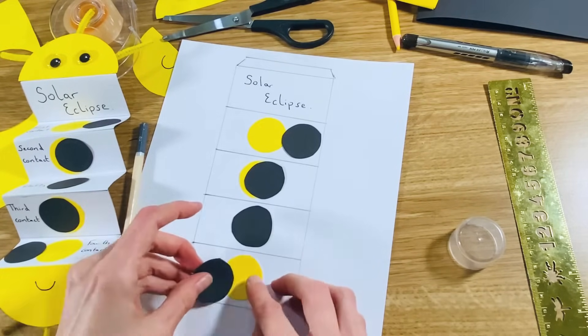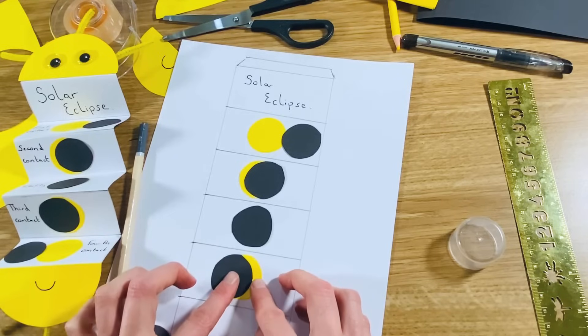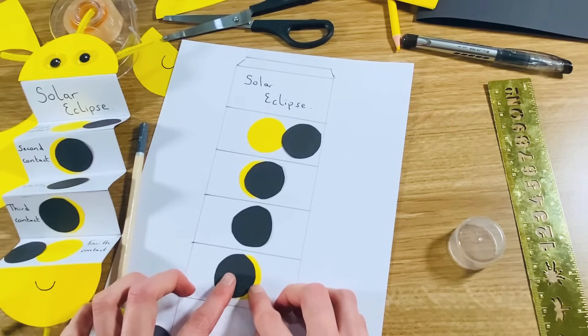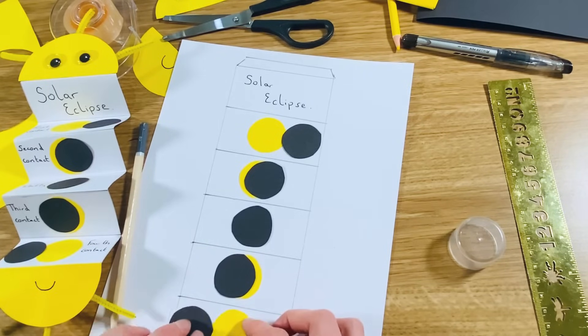And then the moon is starting to move away, revealing that little crescent of sun again. And then last, the moon has moved away and the sun is shining again and it's light.